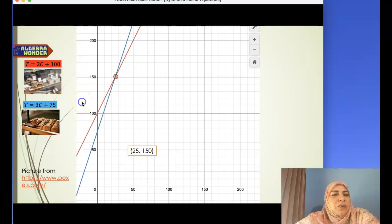The point of intersection, which is the solution, tells us something important. If you buy 25 dozen cookies, both companies cost the same. Let's verify: $2 times 25 is 50, plus 100 equals 150. For the other company, $3 times 25 is 75, plus 75 equals 150. So if you buy 25 dozen, it doesn't matter which company you choose.